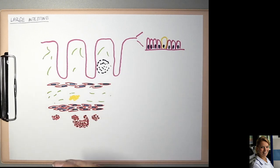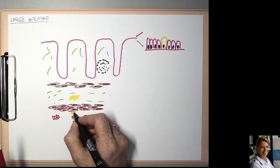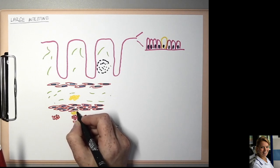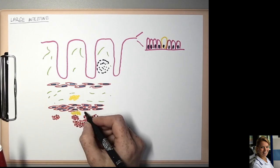And between the circular and longitudinal layer is the myenteric nervous plexus of Auerbach.